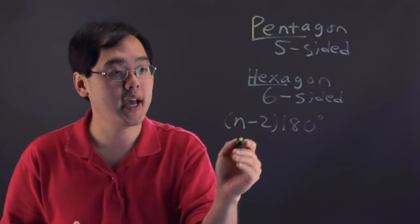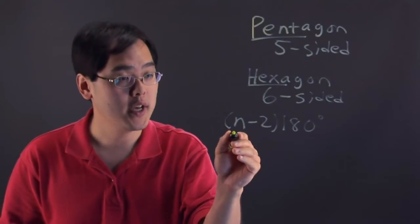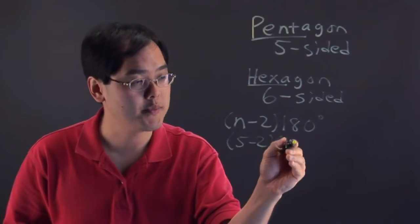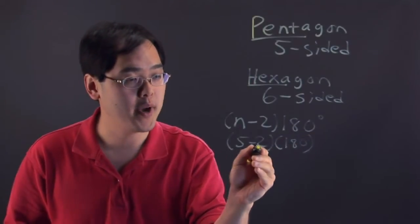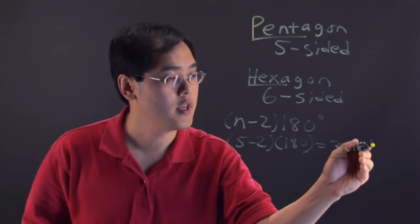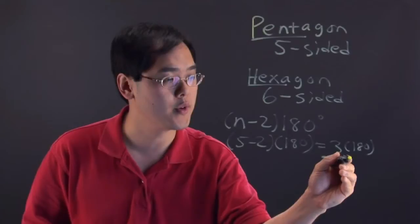Now, with a pentagon, because it's five sides, if you plug in this formula, you have five minus two times 180. Five minus two is three times 180, which is going to be 540 degrees.